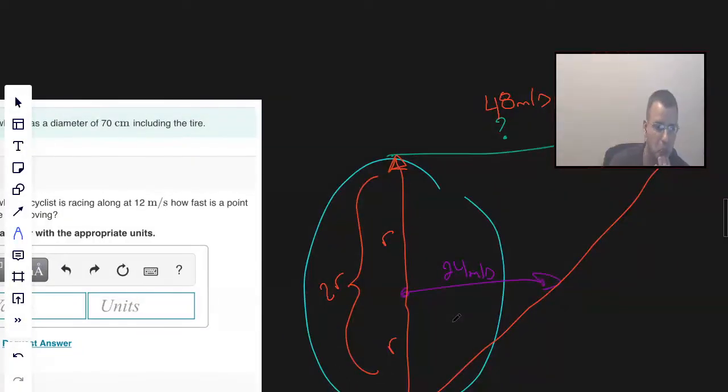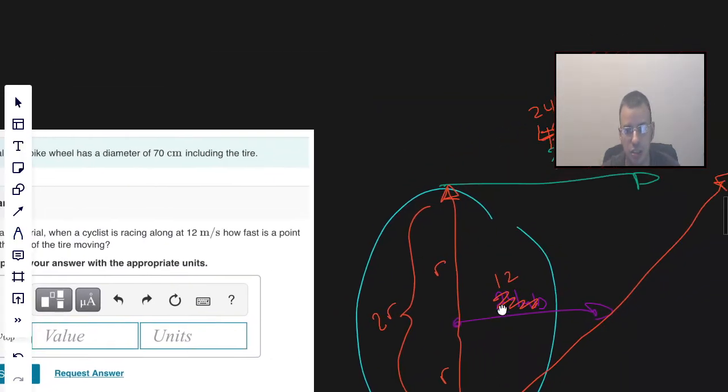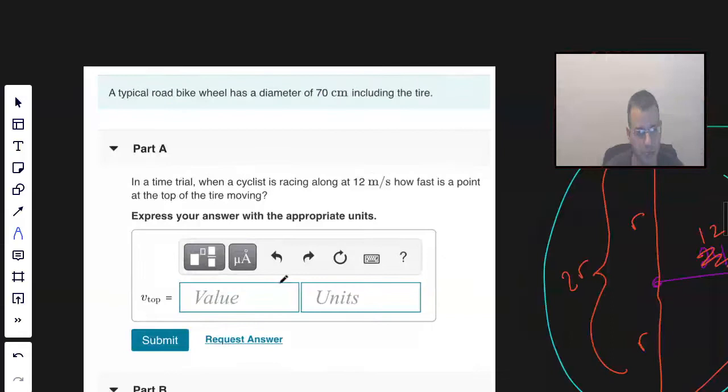No. In the time trial it goes 12 meters per second. Double 12 meters per second, we get 24 meters per second. So the velocity at the top is 24 meters per second. That's probably the easiest way to think of it, just similar triangles.